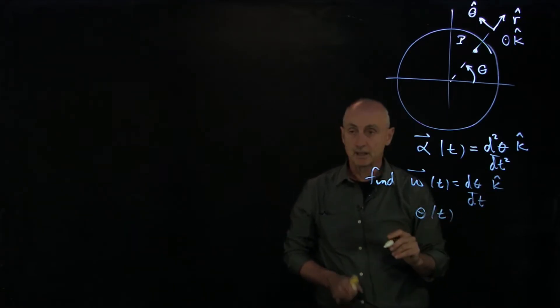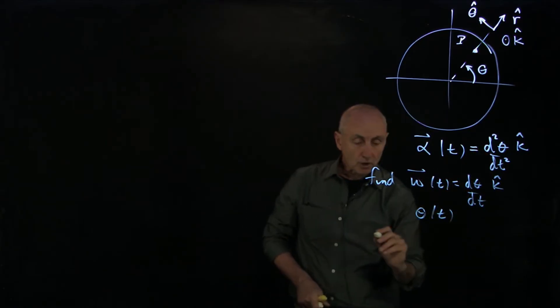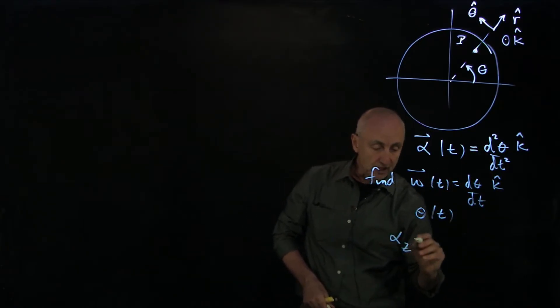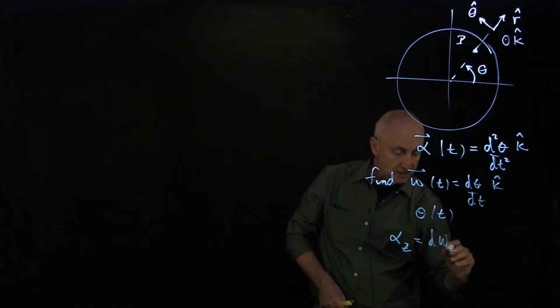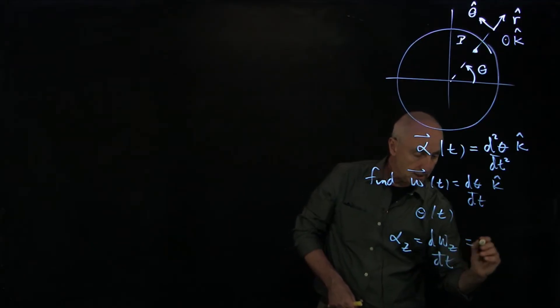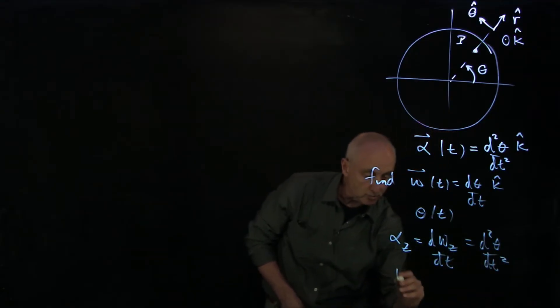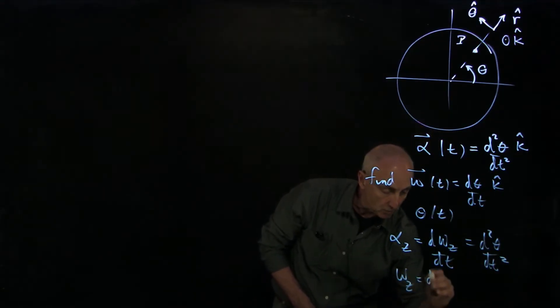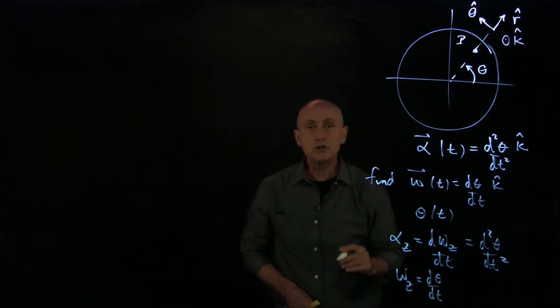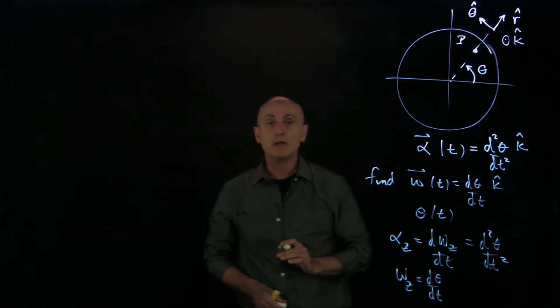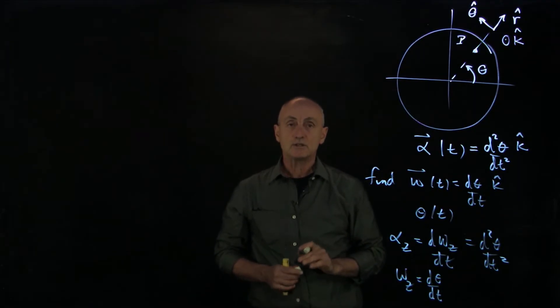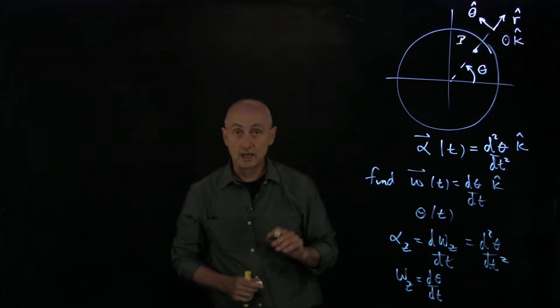Recall that our notation was alpha z equals d omega z dt equals d squared theta dt squared. In this notation, omega z equals d theta dt. What we're going to do is integrate alpha, just like we did in simple circular motion kinematics for point-like objects.